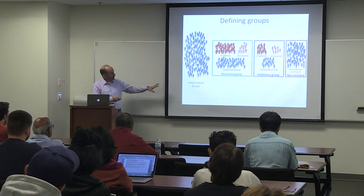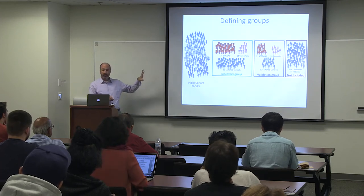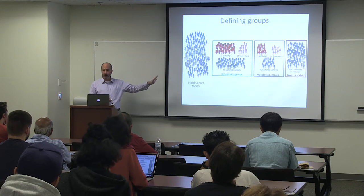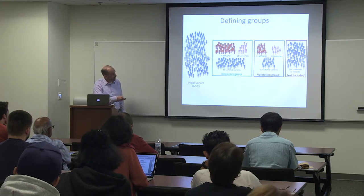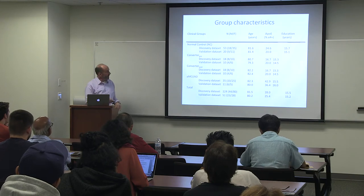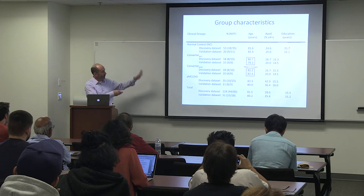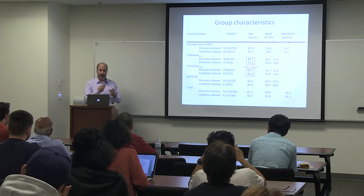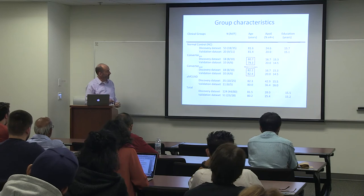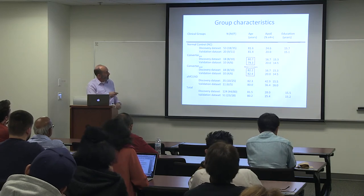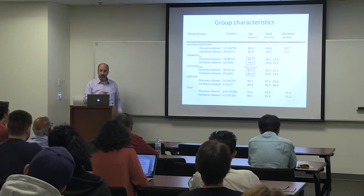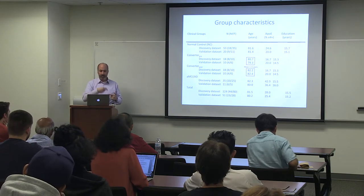We separated subjects into a discovery group and a validation group — developing the biomarker in the discovery group and testing it on the validation group. The groups were all matched, of normal age and education — highly educated, older, 98% Caucasian. Not a representative group of the United States by any means. Cognitively, our normal controls were above the mean on memory, and our converter pre's — people who converted but were still normal at enrollment — were above the mean as well. After conversion, those same people were below the mean, and Alzheimer's patients showed clear impairment.